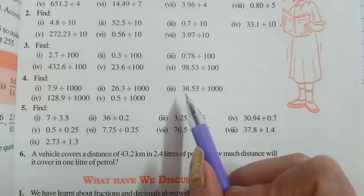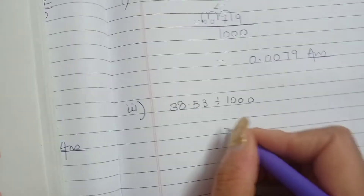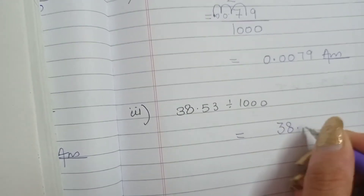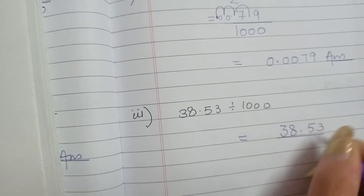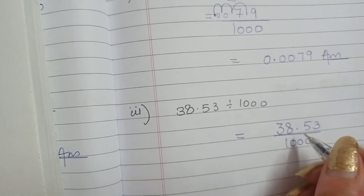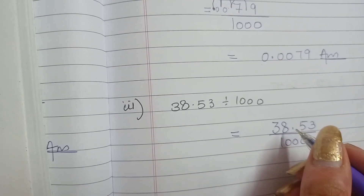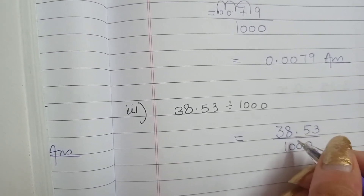Let us move ahead with the third part: 38.53 divided by 1000. Again, your first step is to write the number in fractional form. Now 3 zeros are there in the denominator. How many jumps? 3 jumps. Toward which side? Left side, as it is in division form.